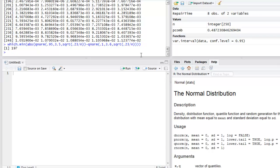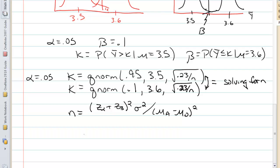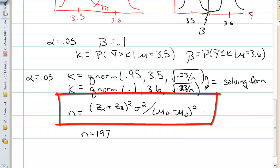In other words, if we wanted to be able to detect that difference of 0.1 in GPA, average GPA, with alpha 0.05 and beta 0.1, we need 197. And now, if you went into R and used this formula, you would get the same value. And that's your sample size calculation.